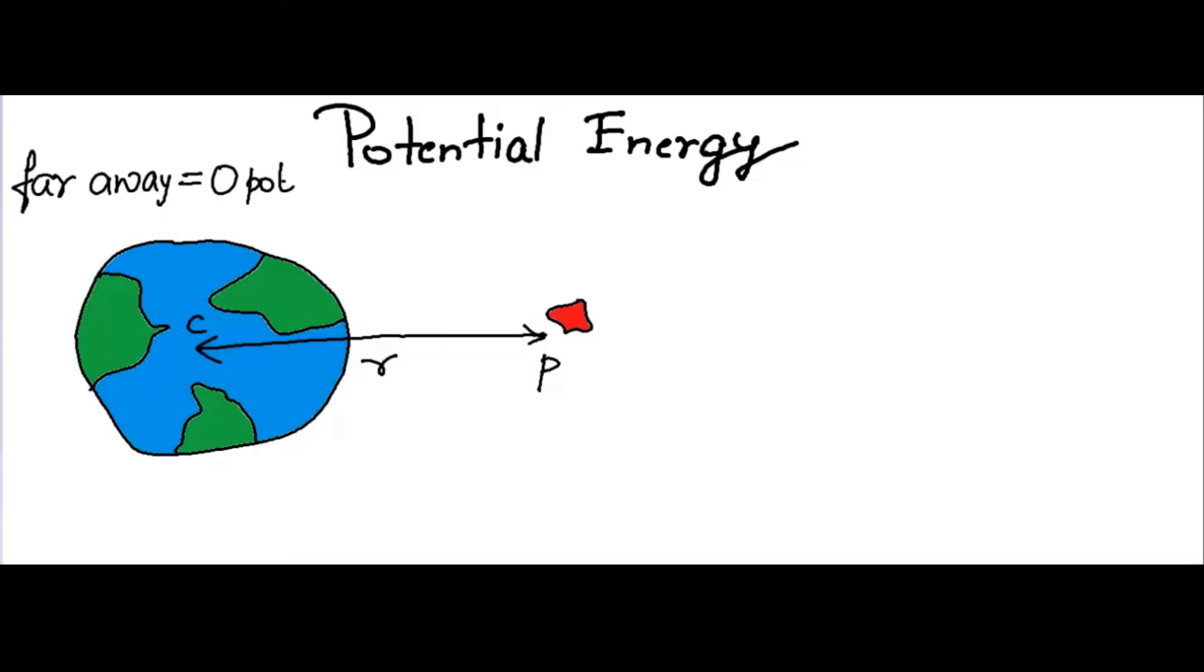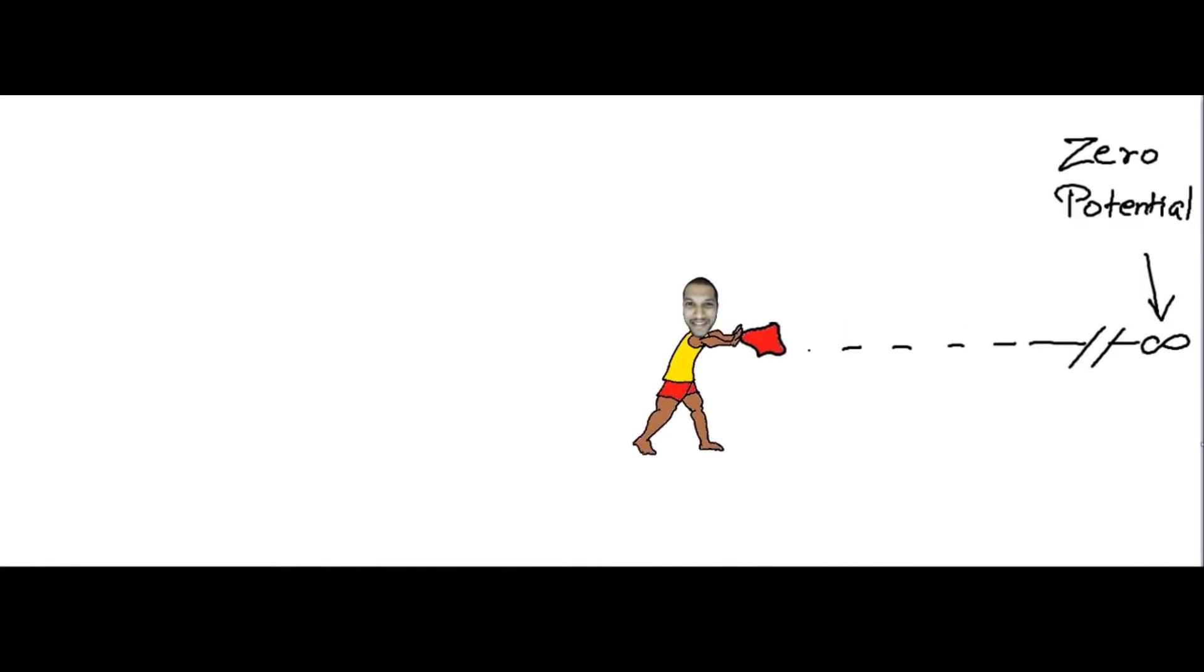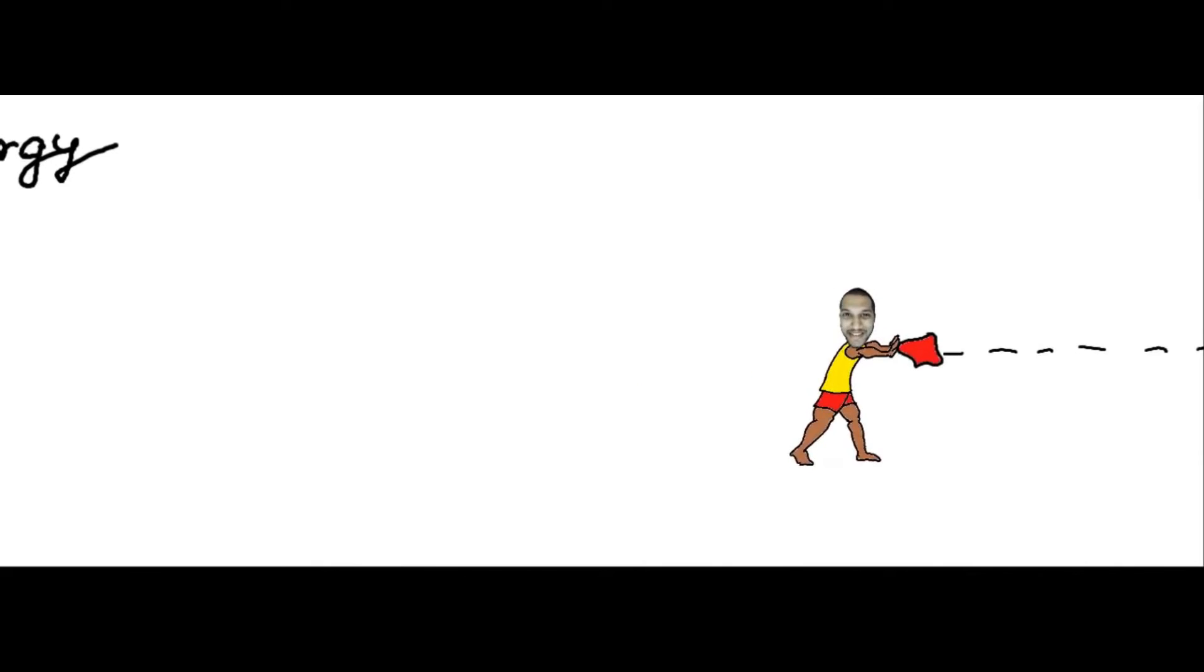Next, I calculate the amount of work that I have to do in pushing the rock all the way from infinity to point P. Notice that my push has to be in the opposite direction of the motion, hinting that my work done would be negative.